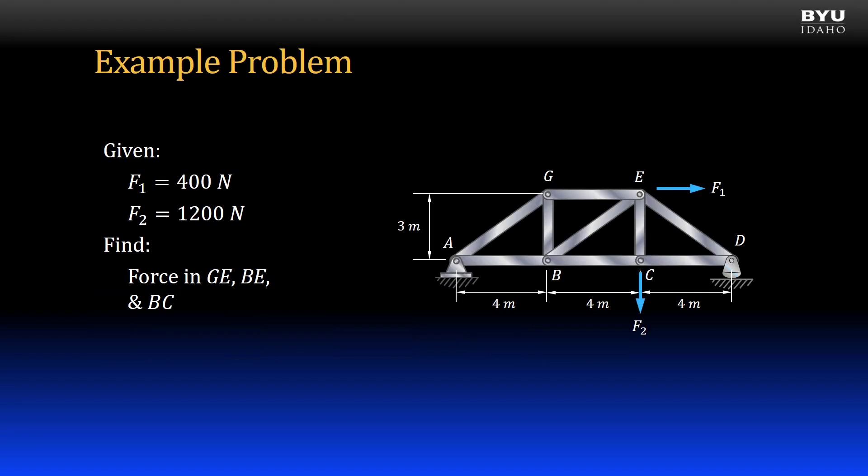In this example, we have a truss consisting of nine members. It is supported by a pin support at A and a rocker support at D. Two forces are applied as shown, with their magnitudes given. We will find the forces in members GE, BE, and BC.